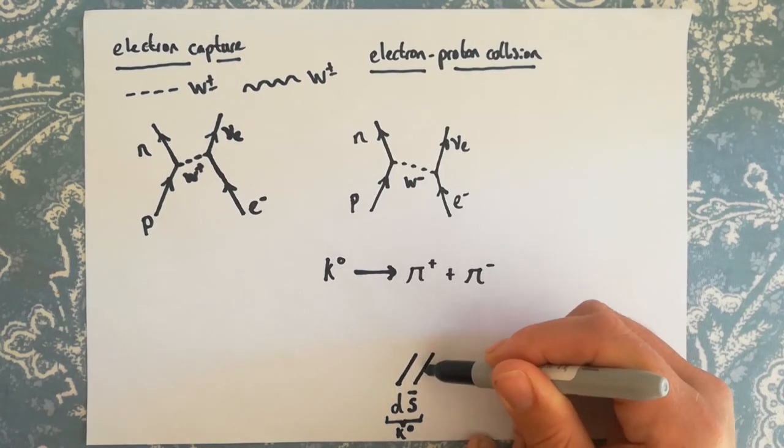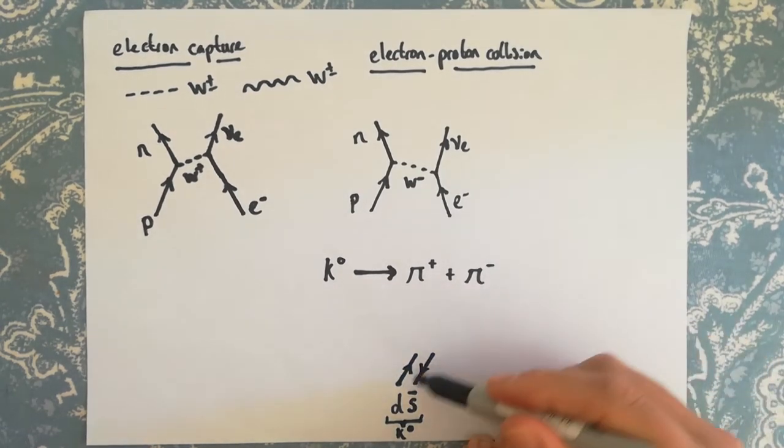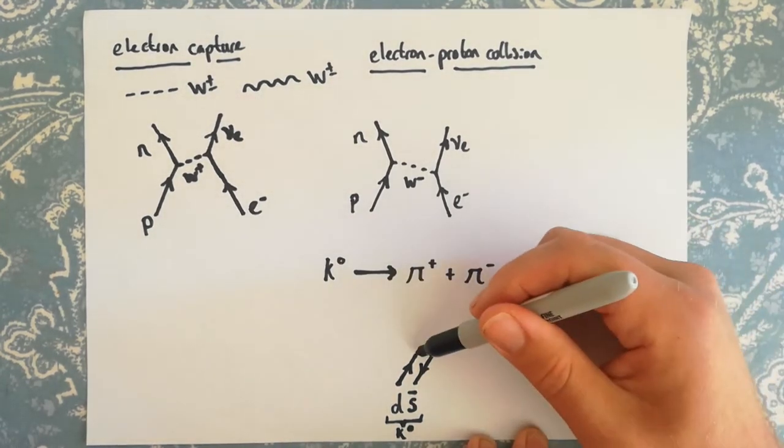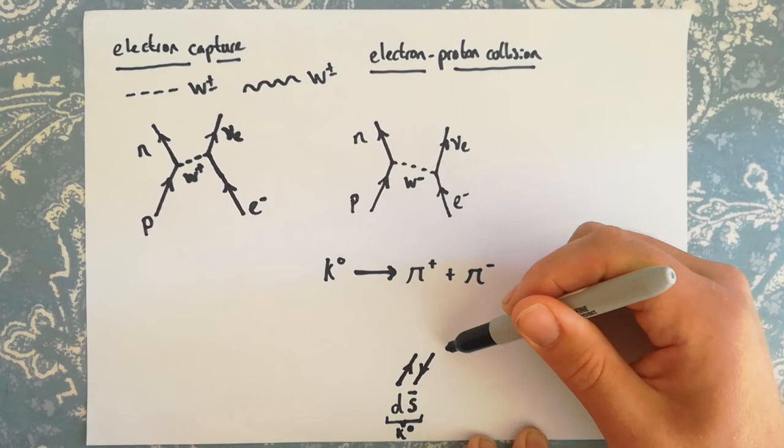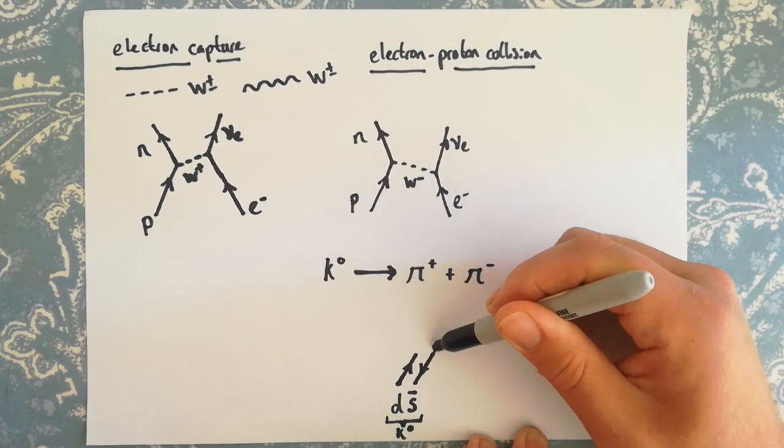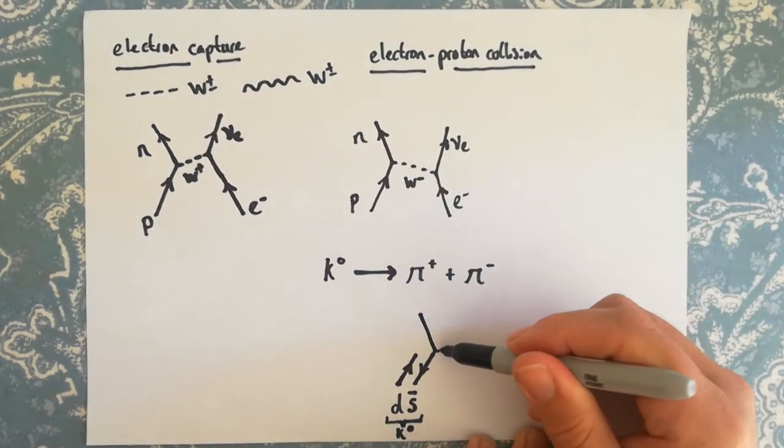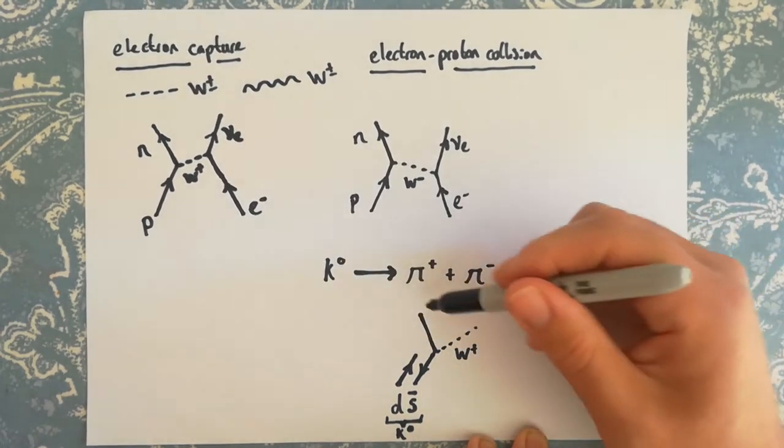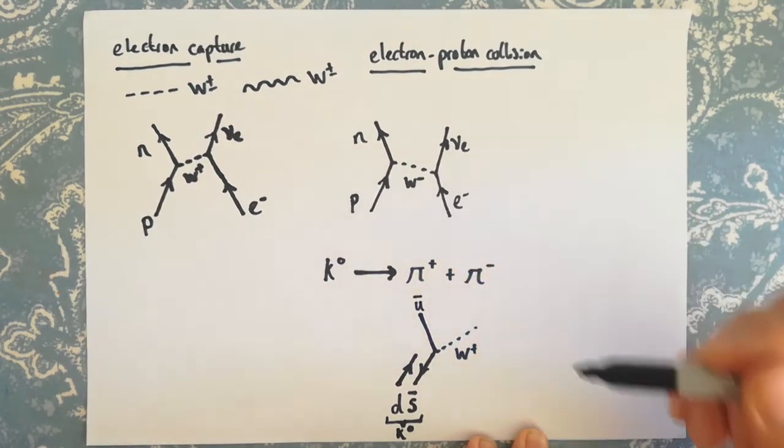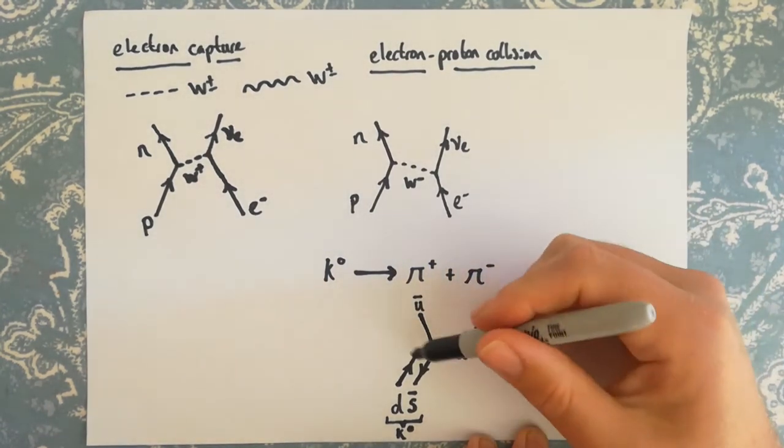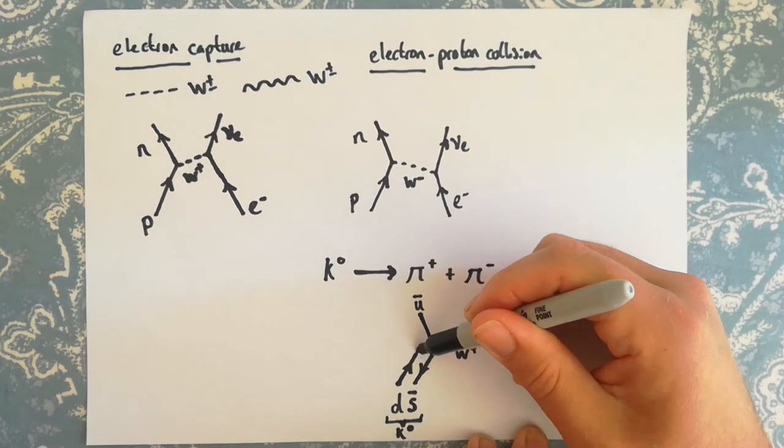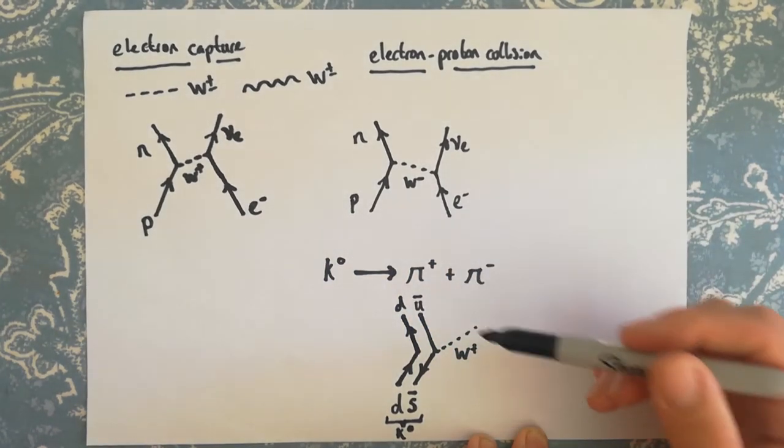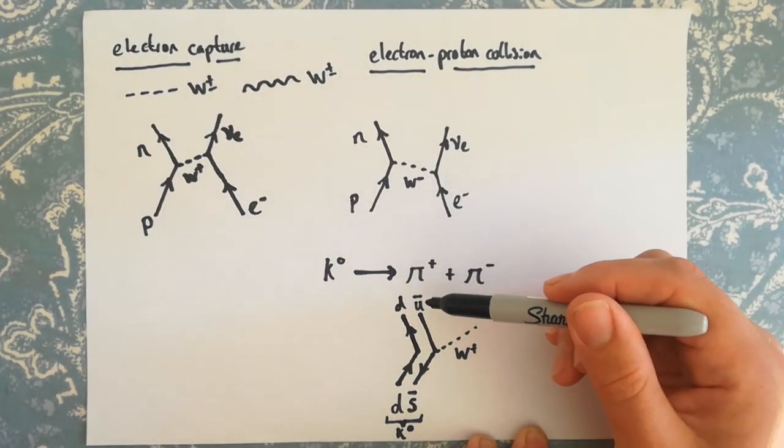I'm going to draw those particles proceeding. They go together because remember these quarks are bound together in this kaon meson. The anti-strange quark is going to emit a W plus boson, and as it does that, it's going to change its identity into an anti-up quark. The down quark is not directly involved, it's going to stay as a down quark.